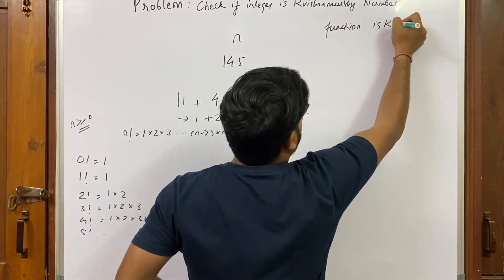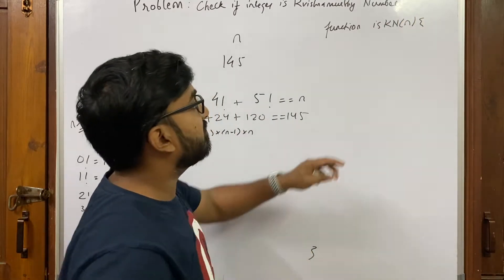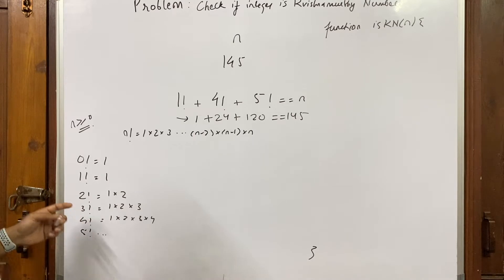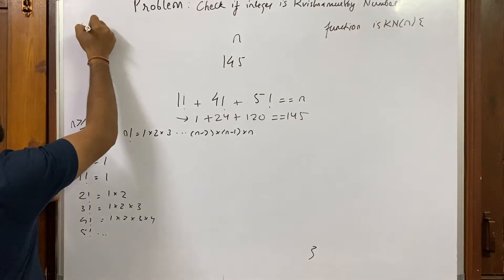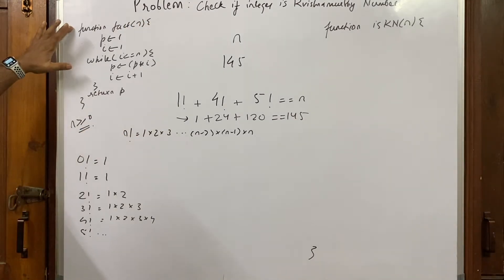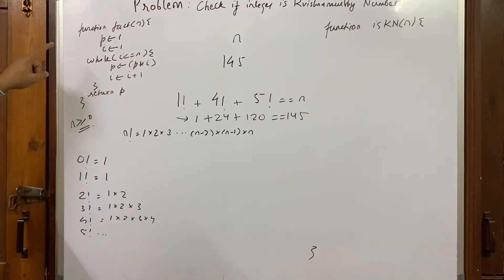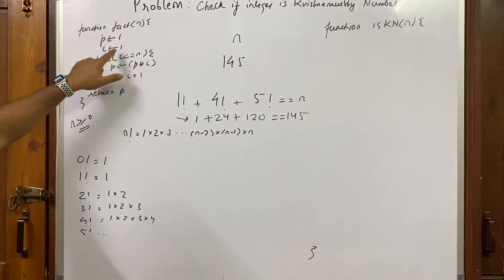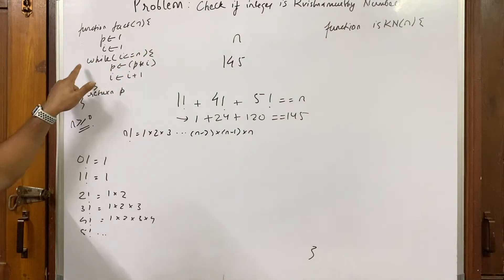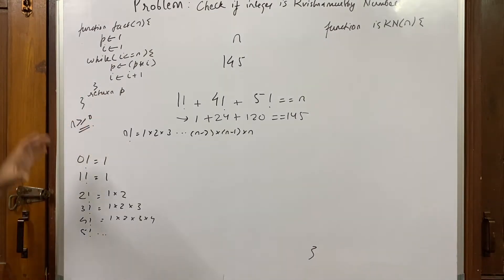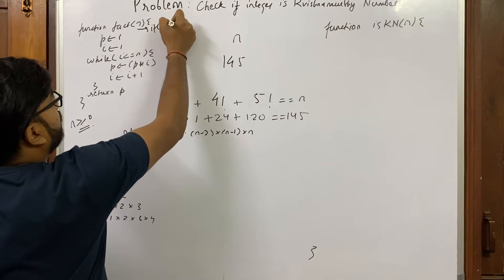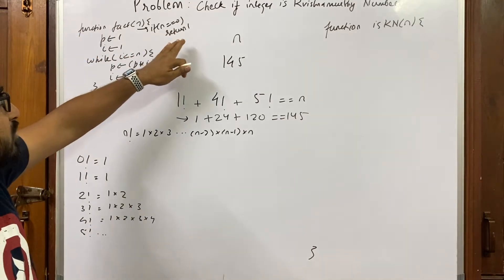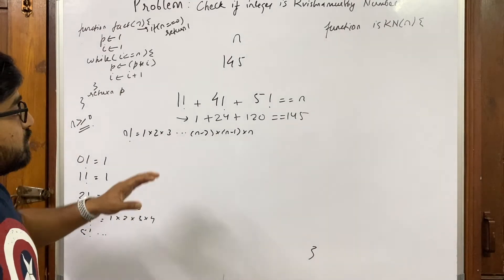Let's write pseudocode. We have a function isKrishnamurtiNumber that takes an integer n and returns true if n is a Krishnamurti number, else false. First we need a factorial function. The factorial pseudocode finds the factorial of integer n, defined for n ≥ 0. If n is 0 the loop never runs and returns 1. You can also add an explicit if-condition at the top: if n == 0, return 1 — this is visually clearer.